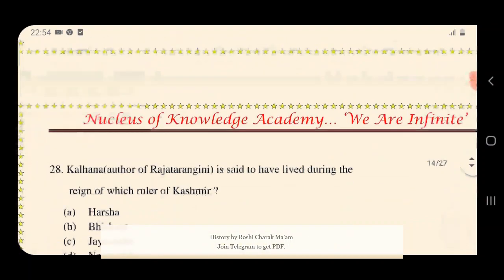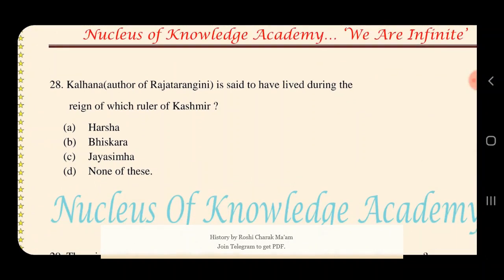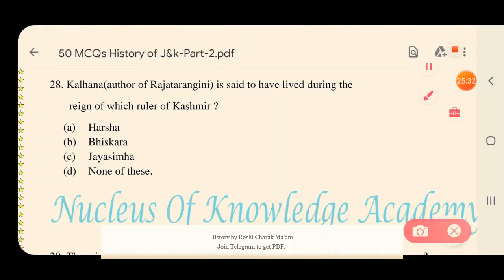Question 28: Kalhana, the author of Rajatarangini, is said to have lived during the reign of which ruler of Kashmir? Options: A) Harsha, B) Uccala, C) Jayasimha, D) None of these. The answer is Jayasimha — Kalhana was a contemporary of Jayasimha.